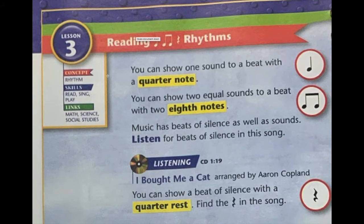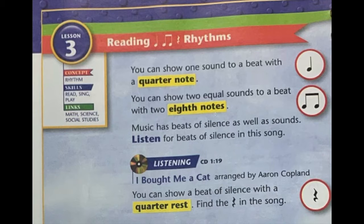We have two notes that we've already been working with. You can show one sound to a beat with a quarter note, which we also know as ta — that's when we make one sound or one clap. And you can show two equal sounds to a beat with two eighth notes, or an eighth note pair, also known as ti-ti. So those are the two notes that we already know and have been working with.